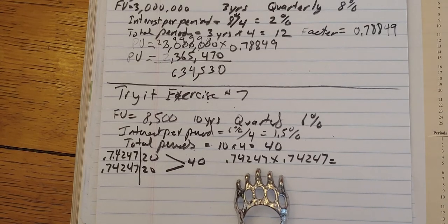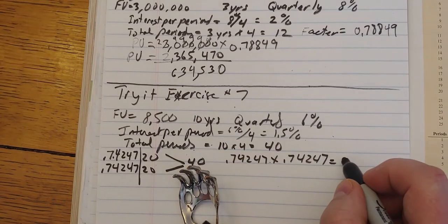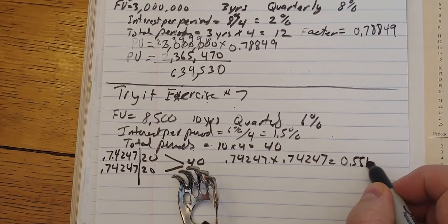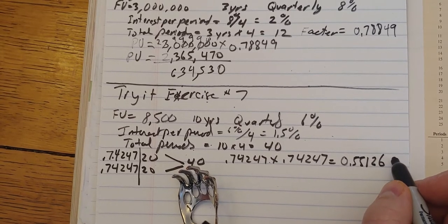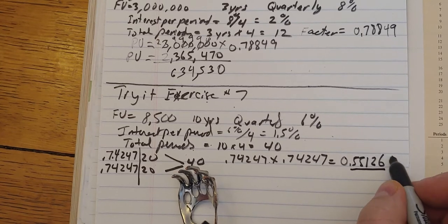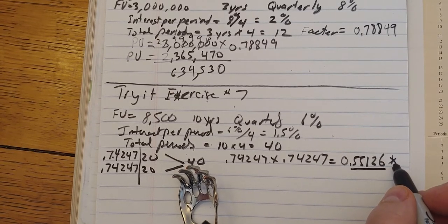So when I take 0.74247 and multiply that by itself, that should give me 0.55126. The next number is 1, so I leave it as that. 0.55126.